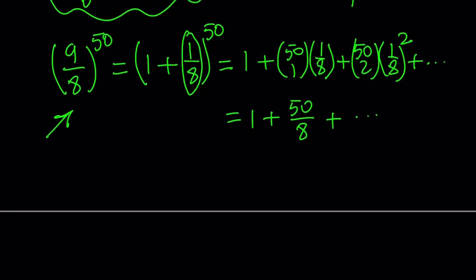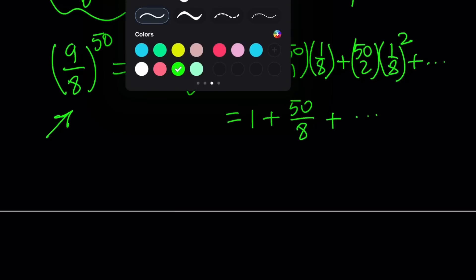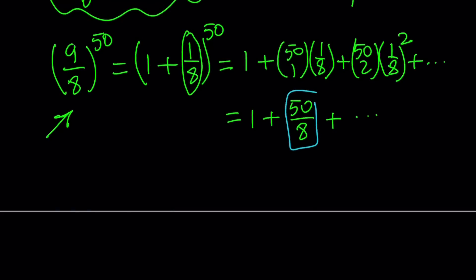And I can easily prove that because 50 over 8 is actually greater than 1, right? This is greater than 1. So 1 plus something greater than 1 is going to be greater than 2. Make sense? That is what I need. So let's go ahead and rewrite it. 9 over 8 to the power 50 is greater than 2. Awesome. How am I going to use it?